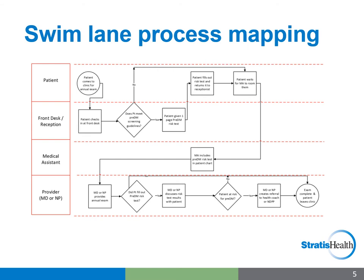In the swimlane diagram example here, we see the process of a typical annual exam at a clinic with the focus of identifying patients for pre-diabetes screening. The actors or participants are segmented into their own swimlanes — the patient, front desk or reception, medical assistant, and the provider MD or NP — and the process is drawn out from top to bottom and left to right.